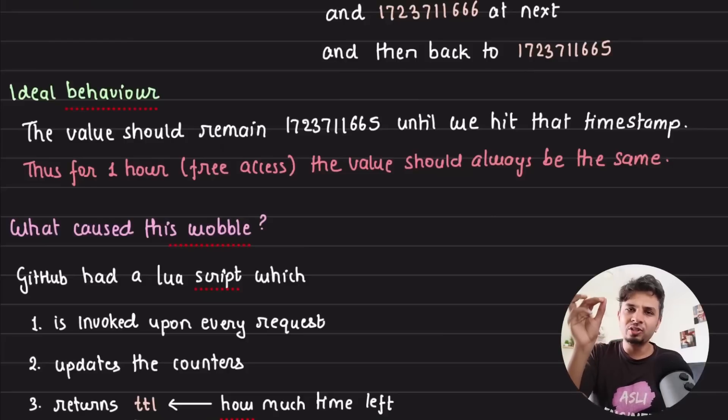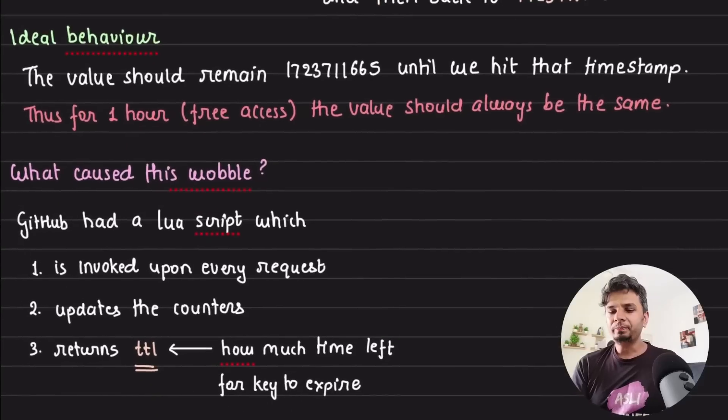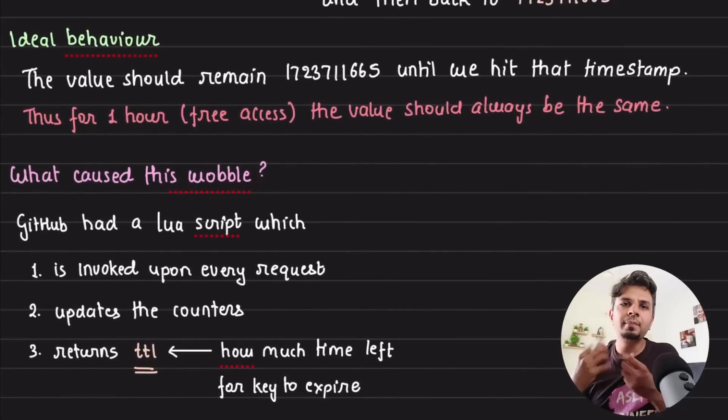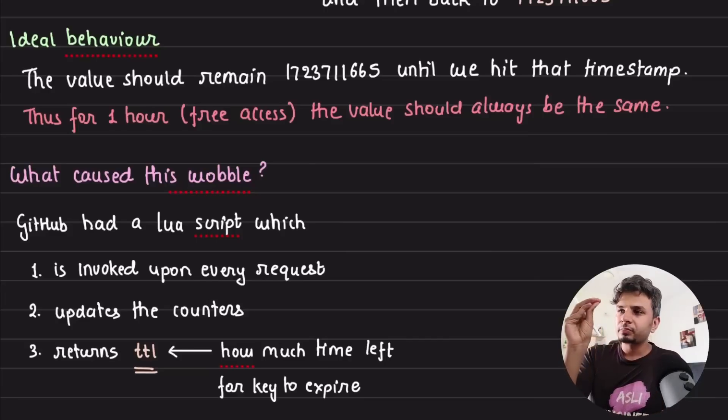Now we'll go deeper into this. How is GitHub using Redis? We'll start with that and then we'll go deeper into why the issue happened. We'll look at the happy path and then we'll look at the edge case. So upon every request that GitHub gets, it fires a Lua script on Redis that basically adjusts all the counters that it needs to do against a rate limit key.